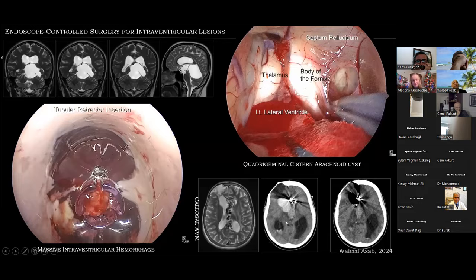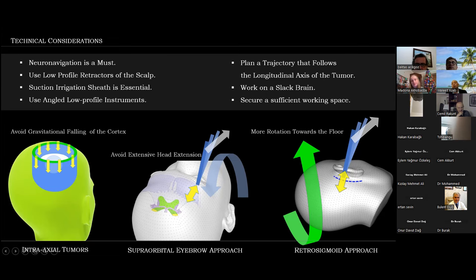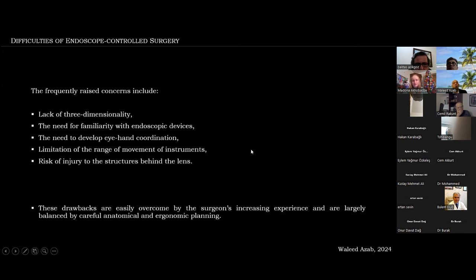Technical considerations in these cases: neuronavigation is a must. Use low-profile retractors of the scalp to have more space. A suction-irrigation sheath is essential to give a smooth and seamless performance with the endoscopic view without having to remove it when it gets smudged. Angled low-profile instruments are very helpful. Plan a trajectory that follows the longitudinal axis of the tumor in intra-axial tumors. Work on a slack brain with sufficient working space. Patient position should be considered — avoid extensive extension contrary to standard microsurgical recommendations. The retrosigmoid approach should be tailored to give proper space.